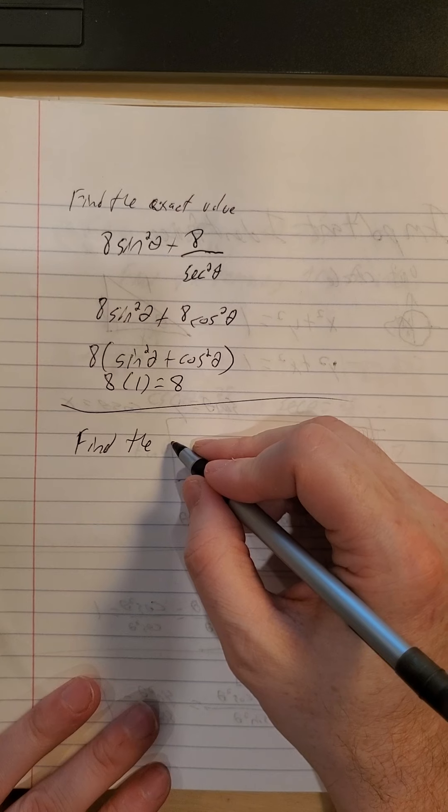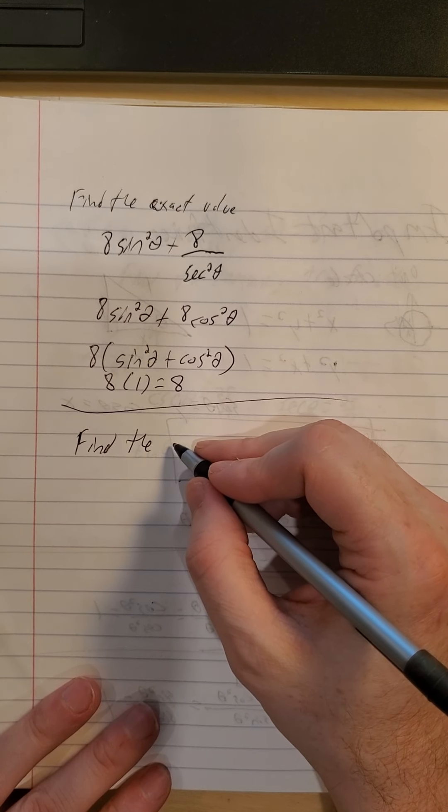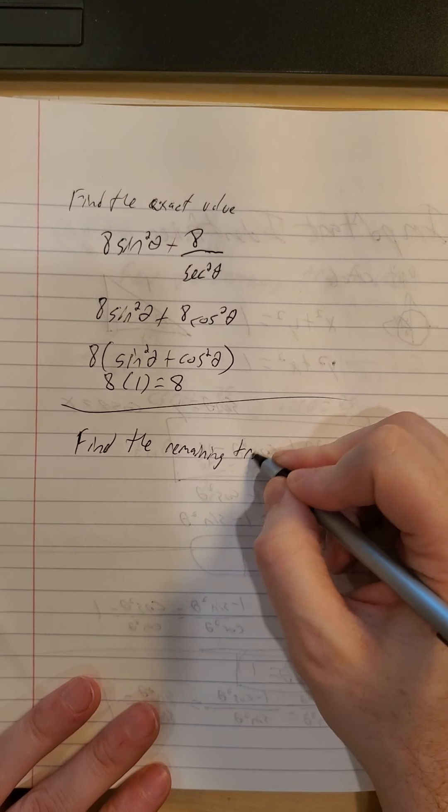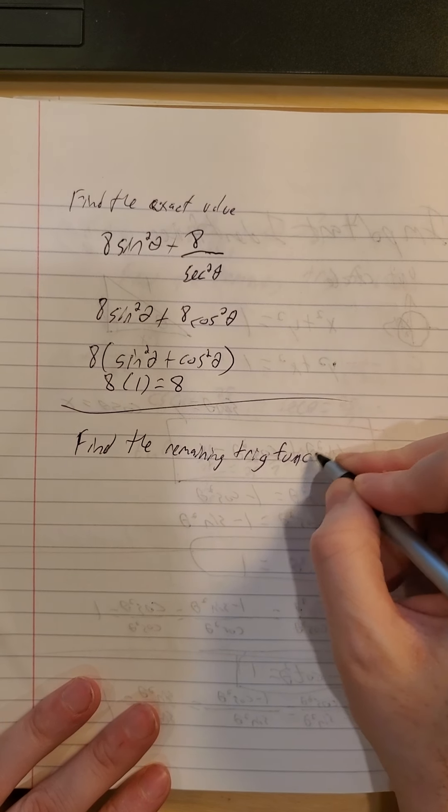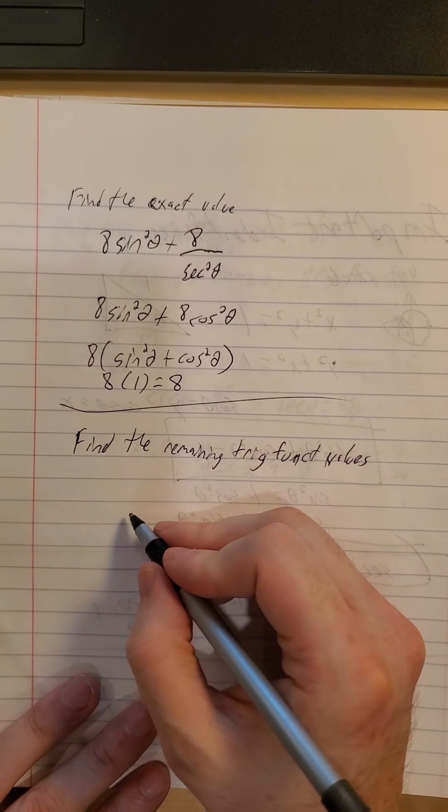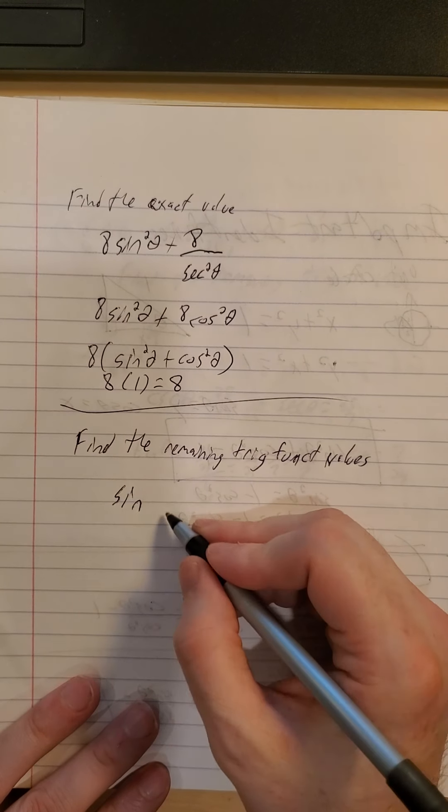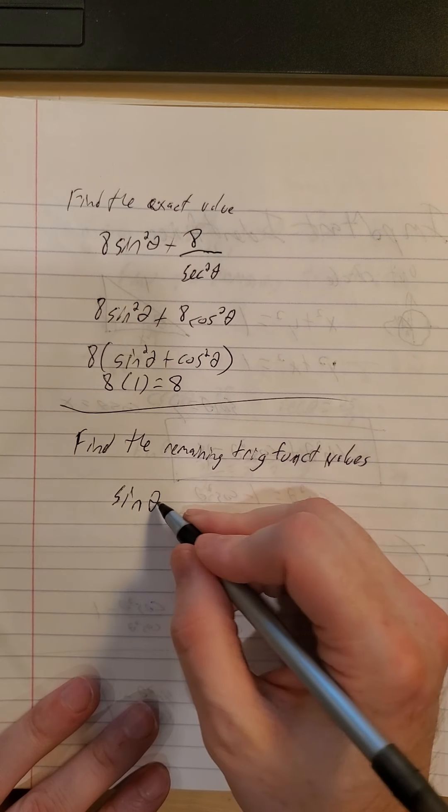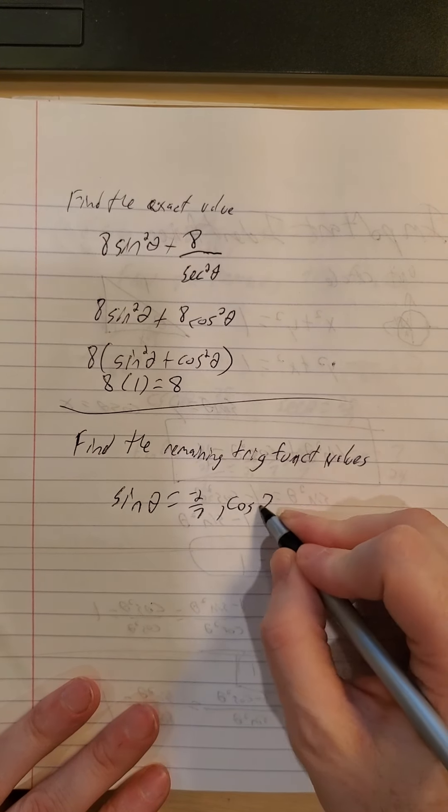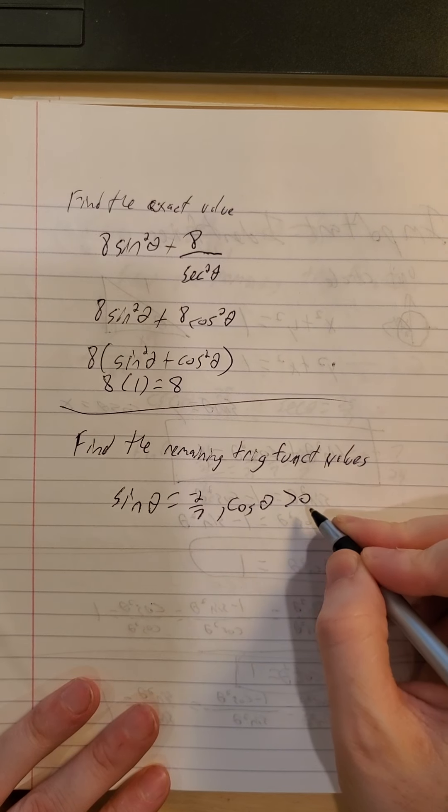Next one, they want us to find the remaining trig values. So let's say they give us that sine of theta is negative two sevenths, and all they tell us is that cosine of theta is greater than zero.